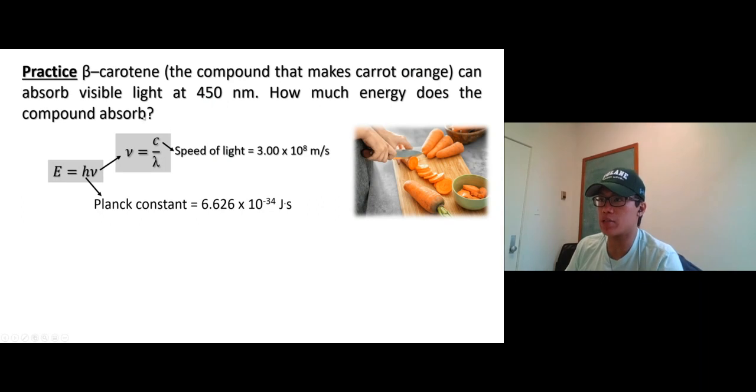Let's do this one together. Beta-carotene, the compound that makes carrots orange, can absorb visible light at 450 nanometers. How much energy does the compound absorb?